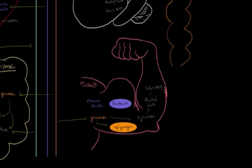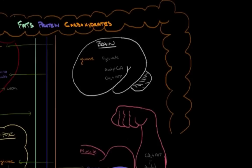In the absorptive state, muscle also takes up the amino acids from proteins that we eat, and these amino acids are just stored as protein in our muscle. Now let's talk about the brain. In the liver, fat, and muscle cells, the primary actions of the metabolic pathways during the absorptive state were to store energy — to store energy as glycogen, triglycerides, and protein. But in the brain, we don't store energy. The brain consumes a vast amount of energy.